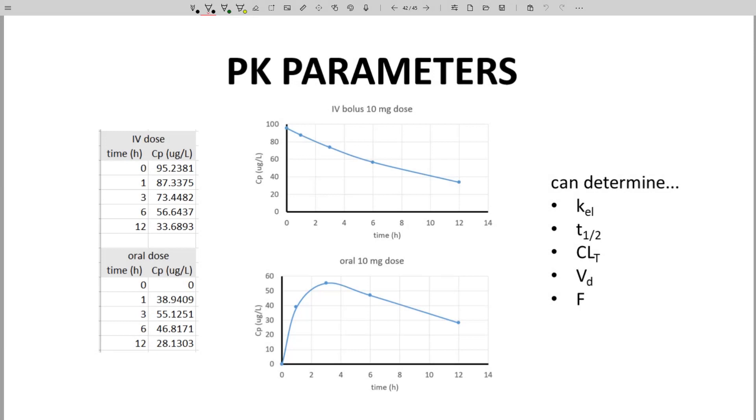During lead optimization, molecules will be tested in animals. Some of the tests will focus on pharmacokinetics of the lead through both IV and oral doses. The collected data allow the determination of all the pharmacokinetic parameters for the molecule: KEL, half-life, clearance, volume of distribution, and oral bioavailability. Or at least one can determine all the pharmacokinetic parameters in that species of animal. These parameters will be different in humans.